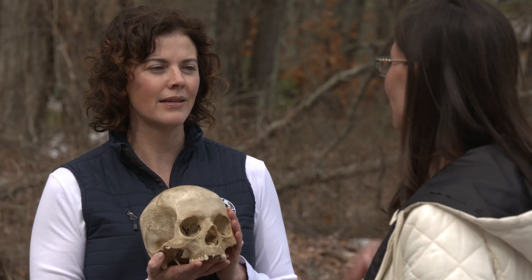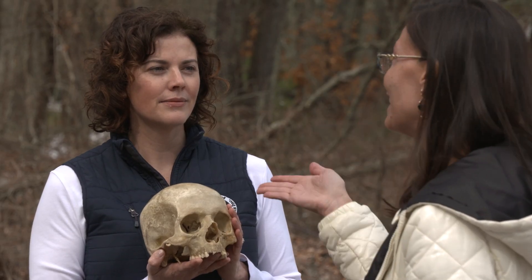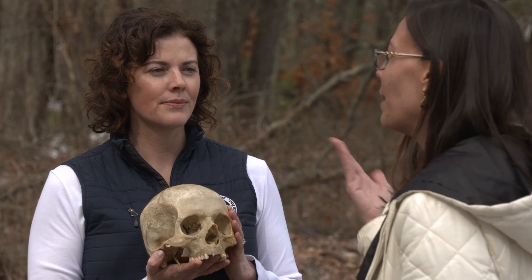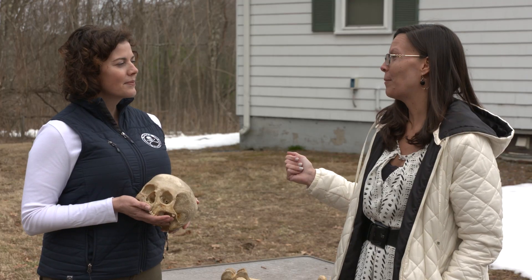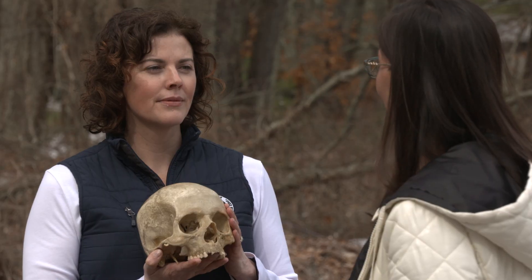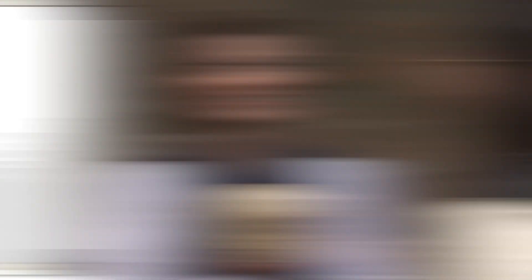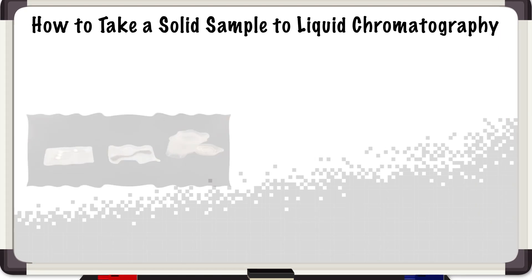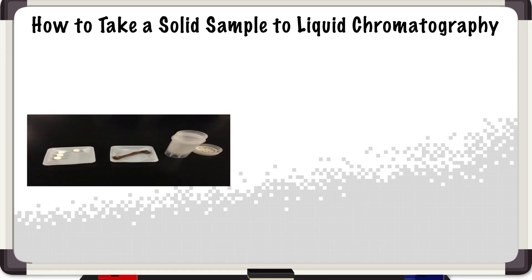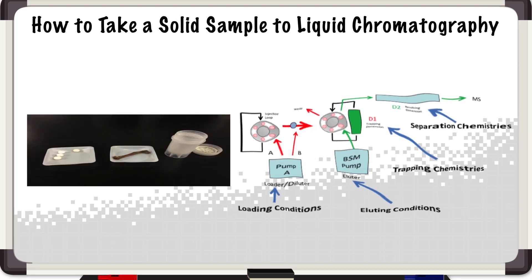Very neat. I still can't imagine that this is an easy process. So maybe you could take me through a whiteboard and show me exactly how you do that. Absolutely. Here we have the extraction process of how we can take a solid sample like bone and get it into a form that we can take to liquid chromatography.